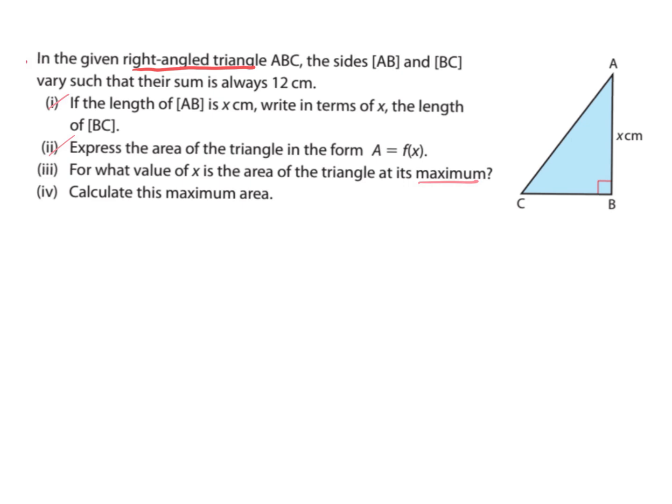Here we've got the symbol for a line segment AB and BC, which vary such that their sum is 12 centimeters. So that word 'sum' there is super important. The line from A to B and the line B to C, their sum equals 12. If the length AB is x centimeters, write in terms of x the length of BC.